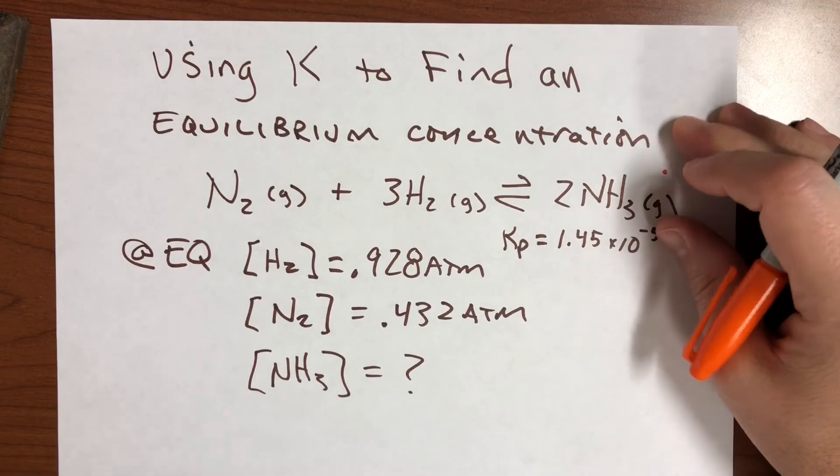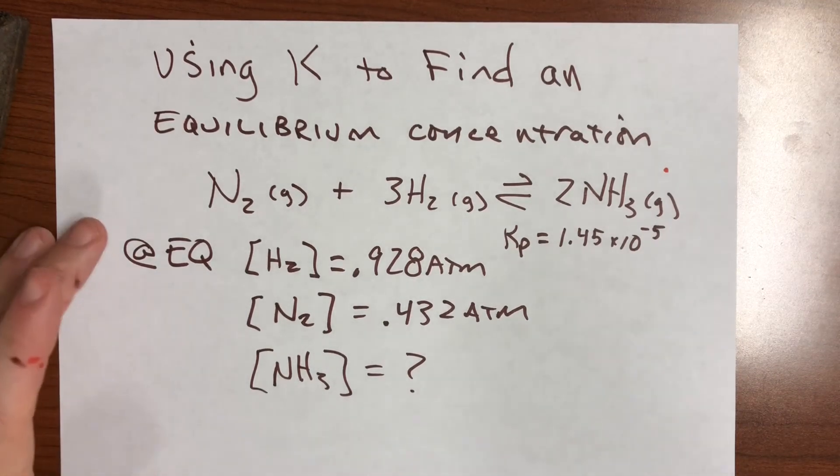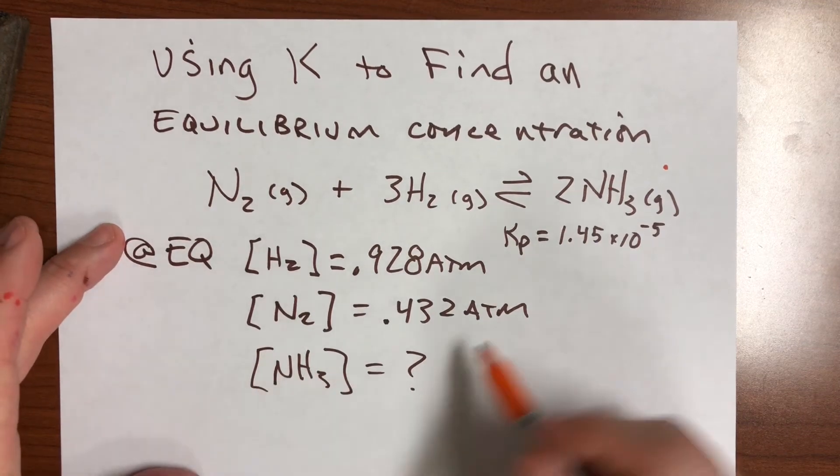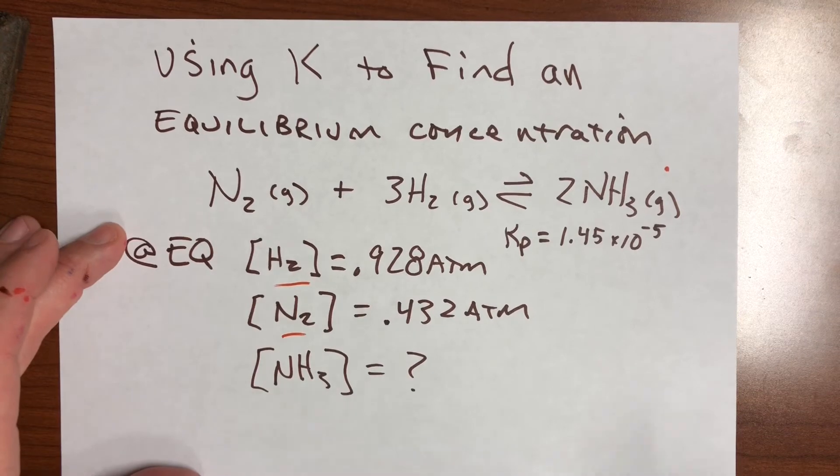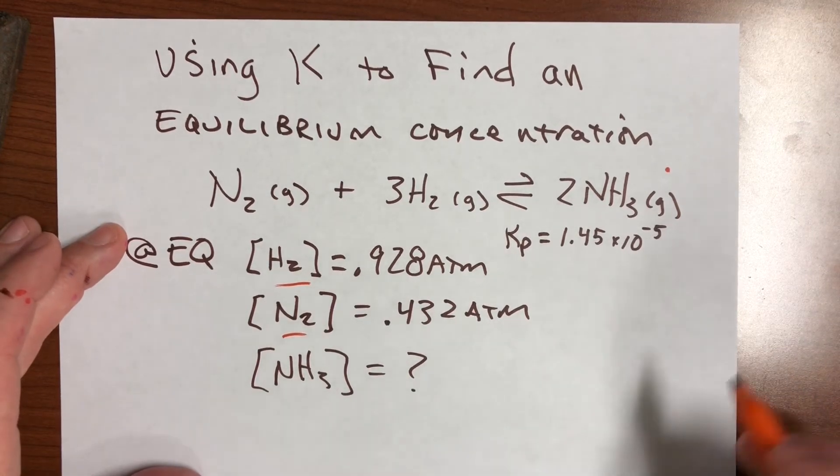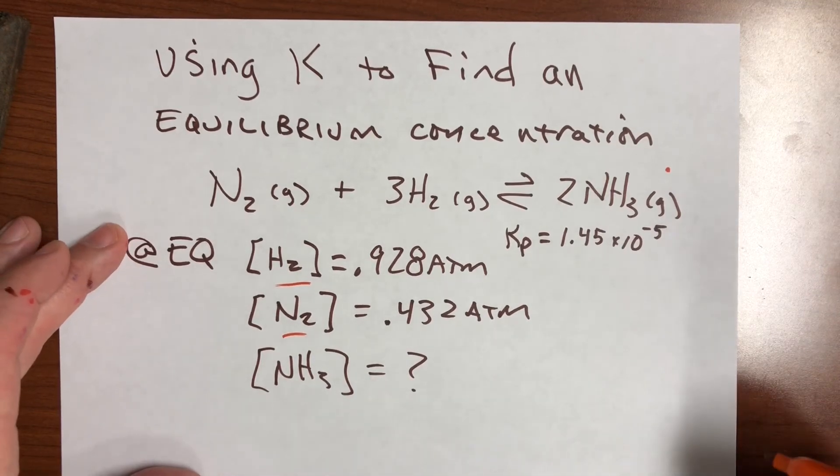And we are told that at equilibrium—so this isn't like the last problem, the last problem we were told amounts, but we were not told whether it was at equilibrium or not. This time we are told it is at equilibrium, and that at equilibrium the partial pressures of hydrogen and nitrogen are given, but they want us to find the equilibrium partial pressure, it's a Kp, of ammonia.